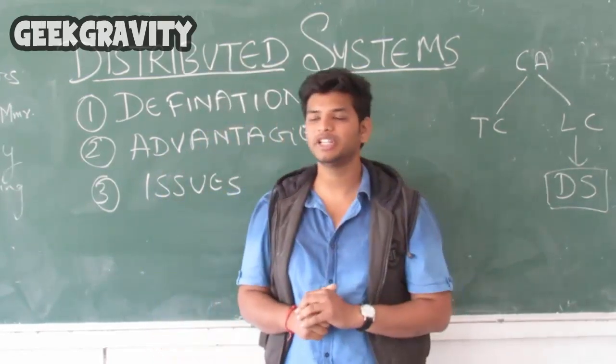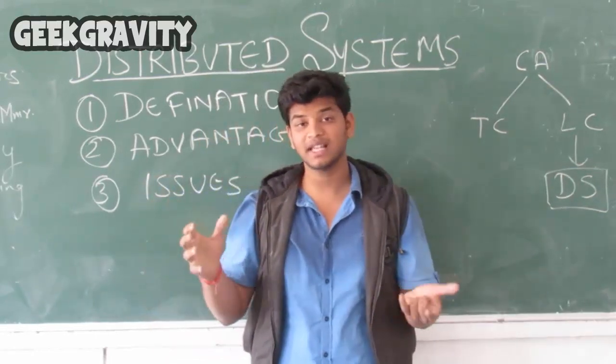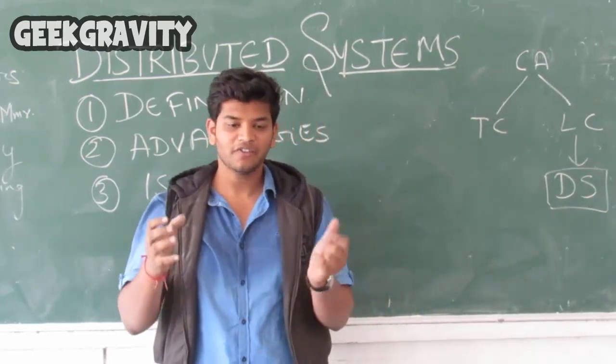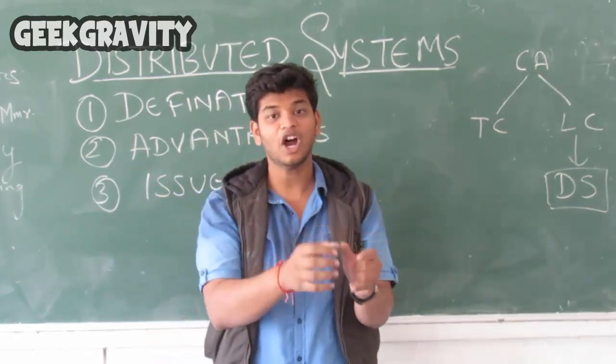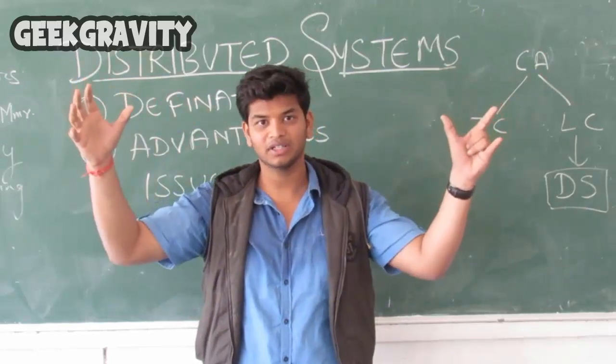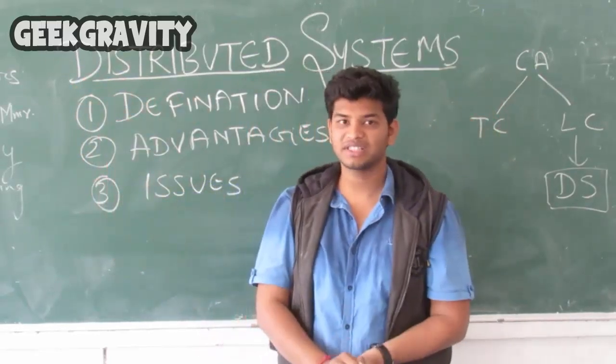The very first issue in distributed systems is that we need to scale. First, we were dealing with a single system. Now, we have to deal with a network of computers, a network of systems. Obviously, we need to scale.